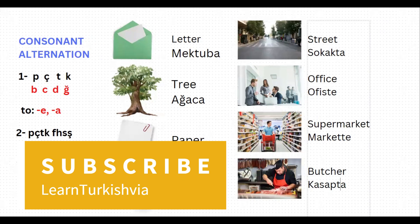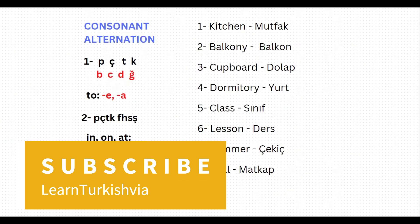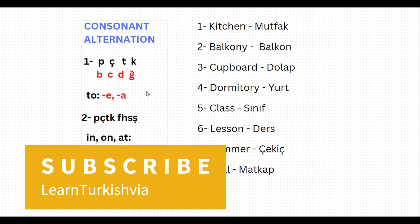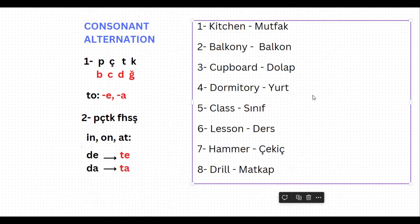Alright, now let's continue with an exercise for some more practice. On the left you can see the rule, on the right we have some new words. Our first word is 'kitchen,' which is 'mutfak' in Turkish. If you want to say 'to the kitchen,' then it is 'mutfak-a.' The last consonant of the word is k, which is one of peçeteğe, so it needs to change and it should be 'mutfağa' — to the kitchen.